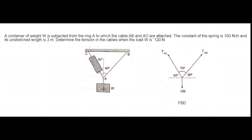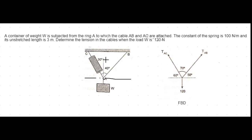In the figure we have two strings AC and AB, with load W equals 120 Newtons acting downward. The angles of inclination of AB and AC are given, and we need to find the tension in those strings. Drawing the free body diagram: since this angle is 90 degrees, this angle will be 50 degrees, this is 30 degrees, projecting gives us 60 degrees, and the summation of 30 plus 40 gives us 70 degrees.